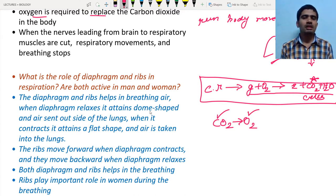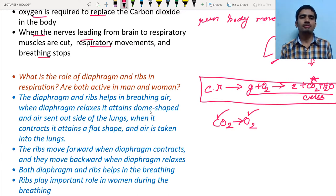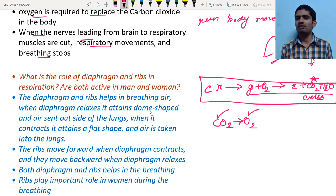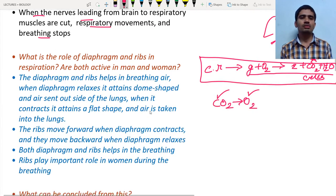Respiratory movements are controlled by signals from the brain. The respiratory muscles are connected to the brain so that signals ensure constant movement of the respiratory system — the diaphragm moving up and down and the chest cavity expanding and contracting — according to the body's needs.